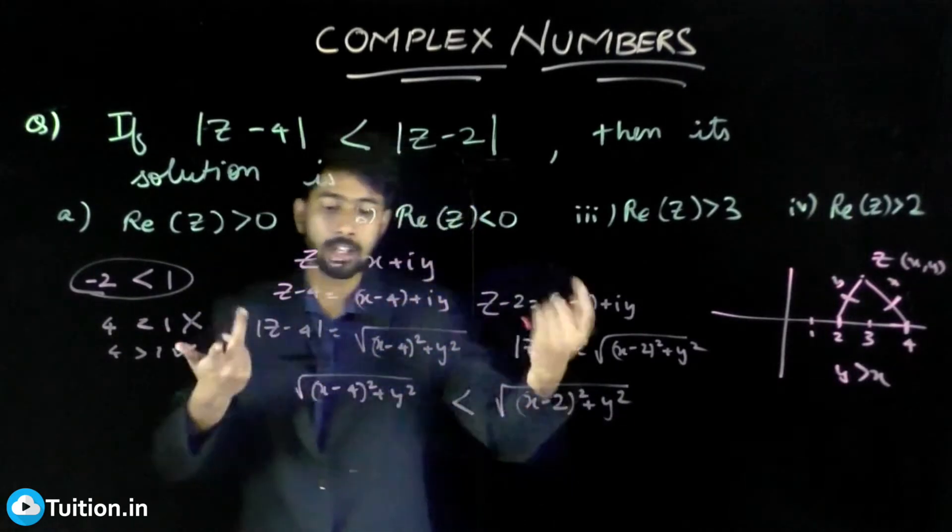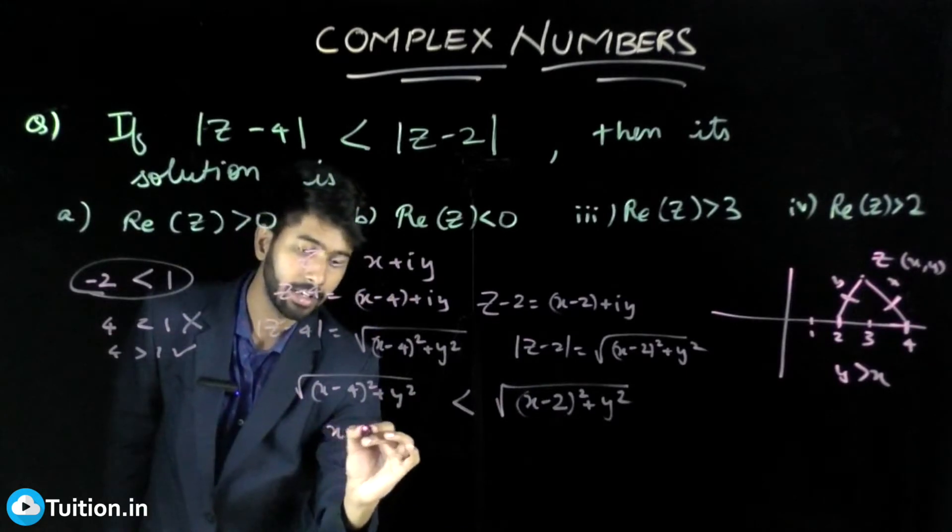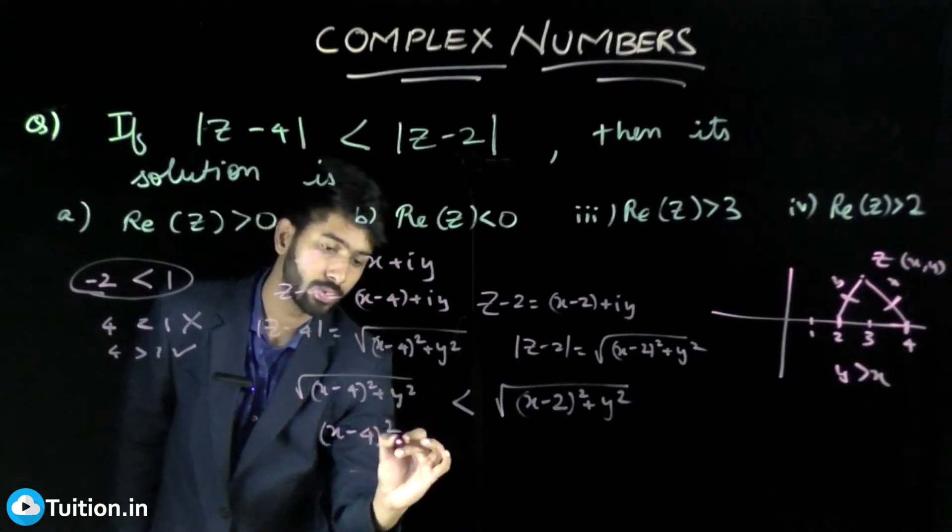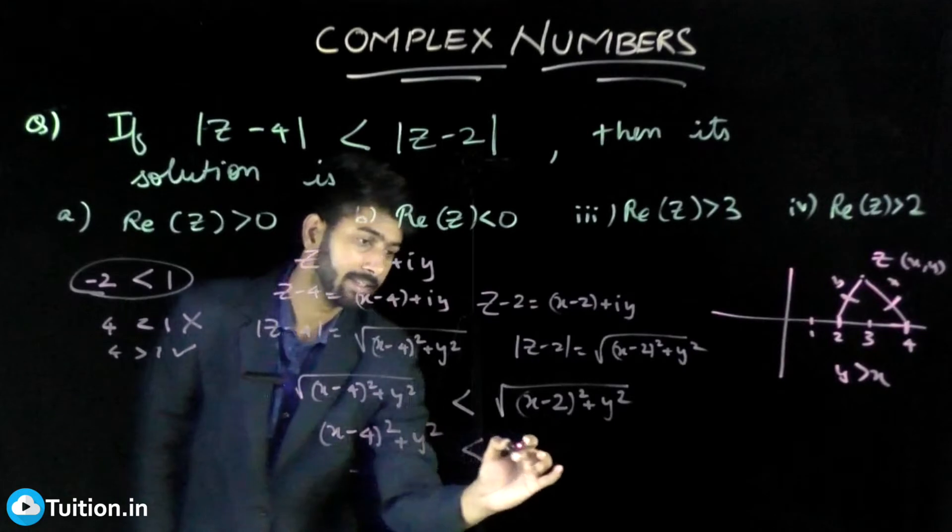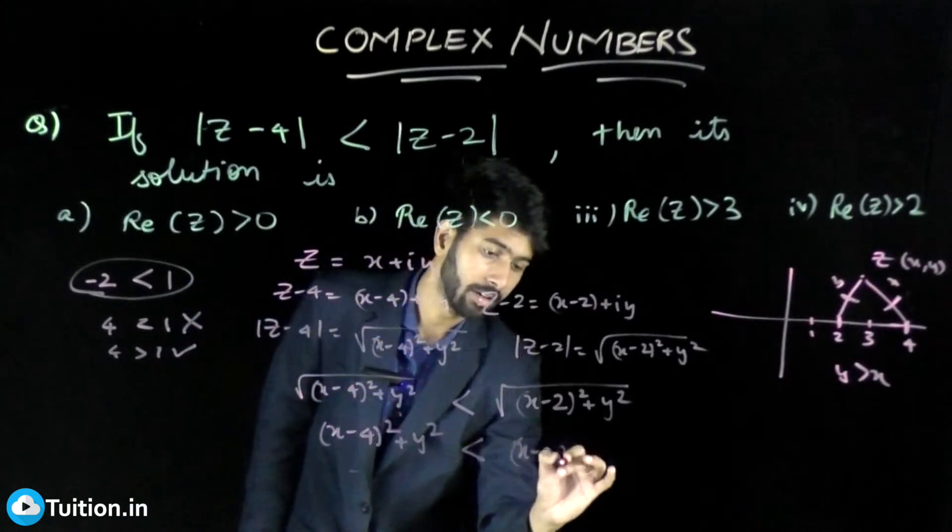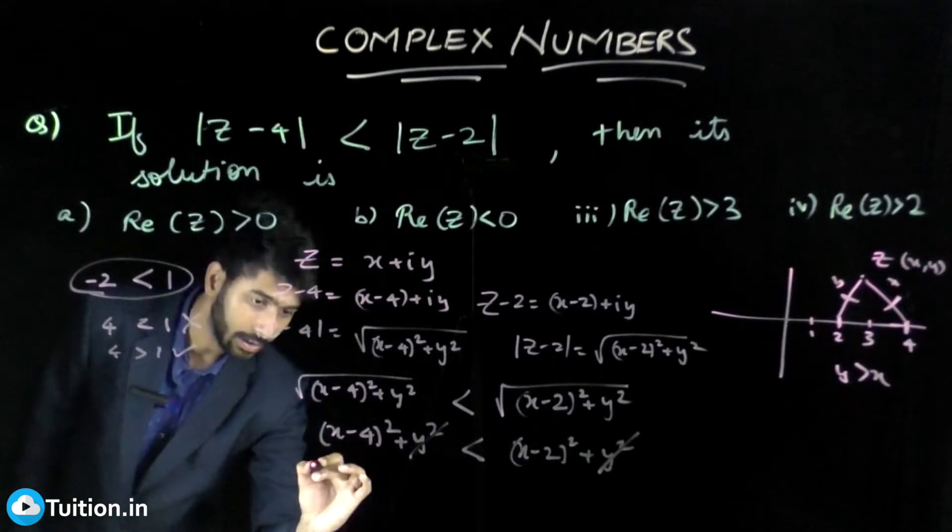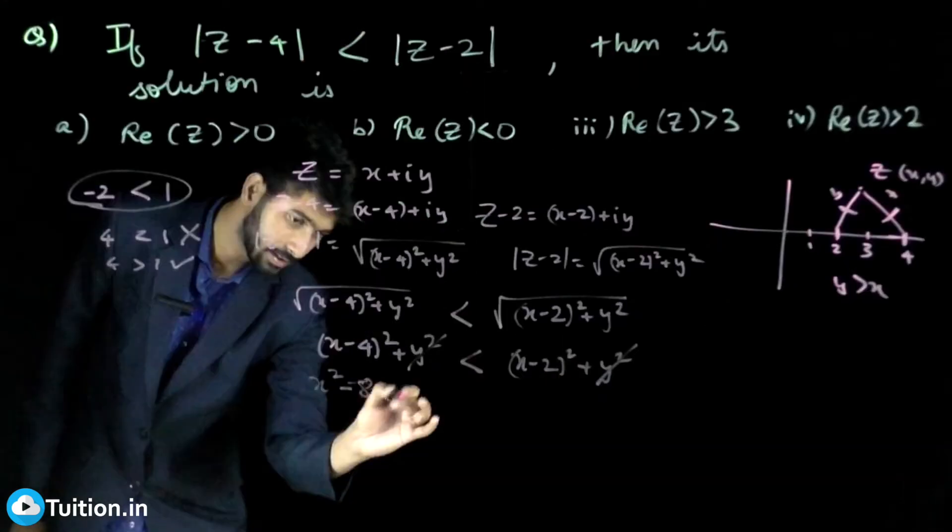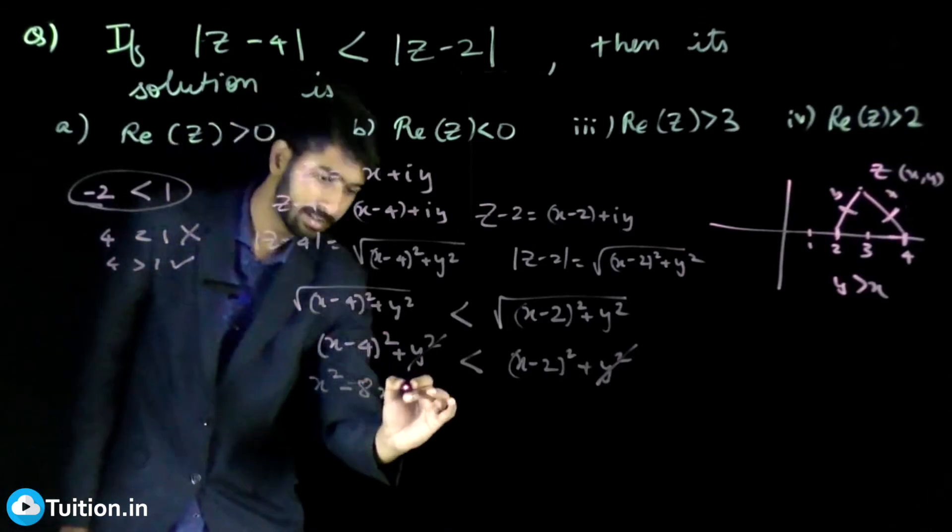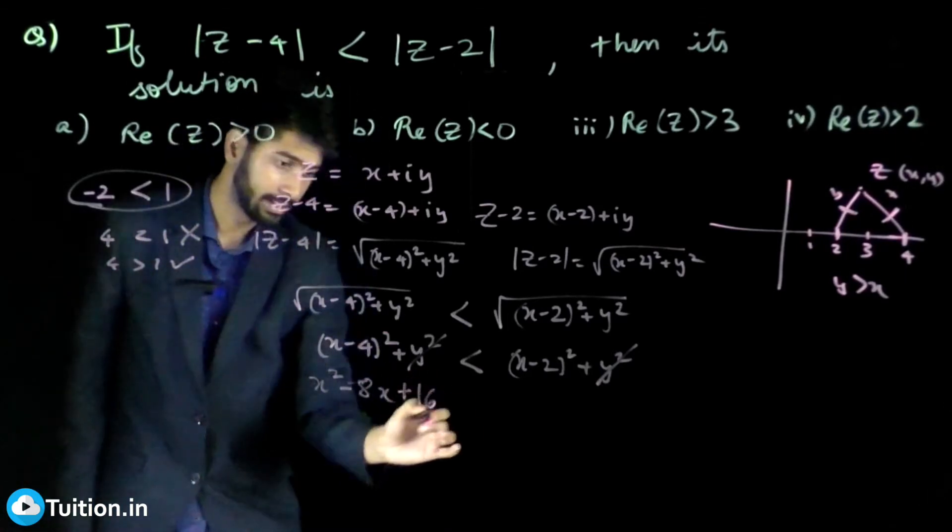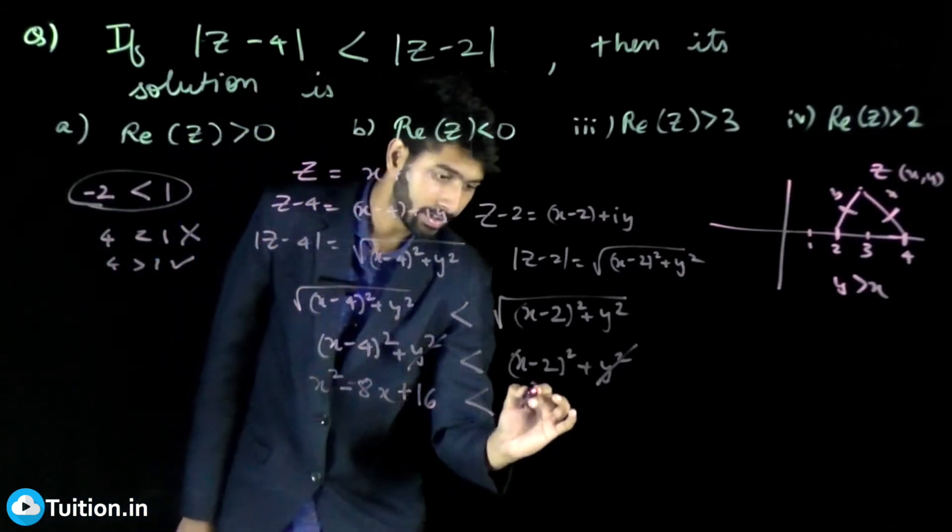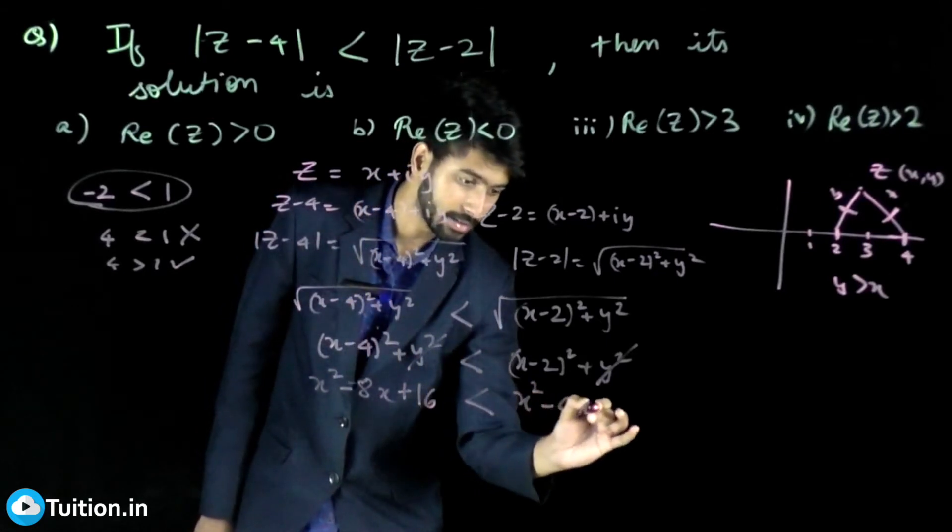So I'll have (X - 4)² + Y² should be less than (X - 2)² + Y². Now you can cancel Y². We'd have X² - 8X + 16 is less than X² - 4X + 4.